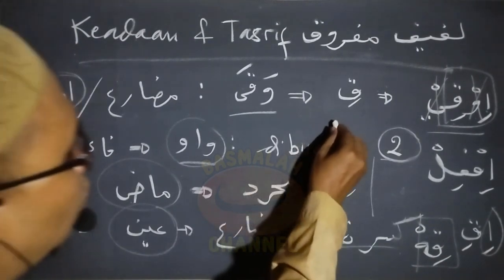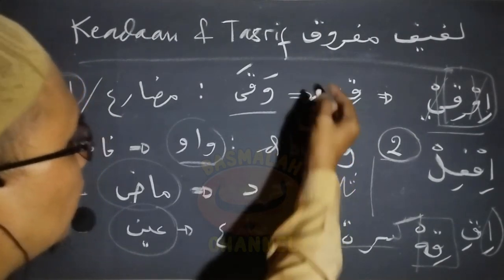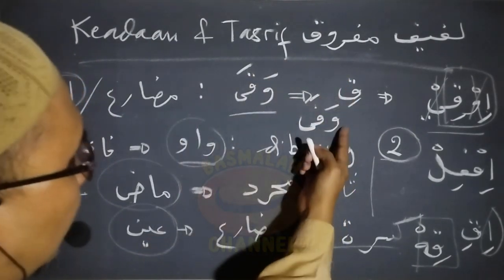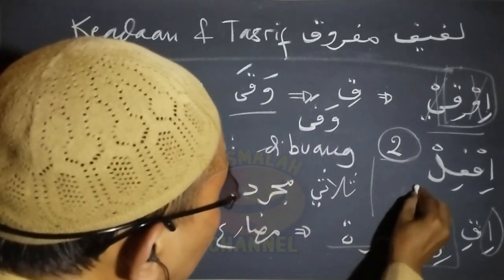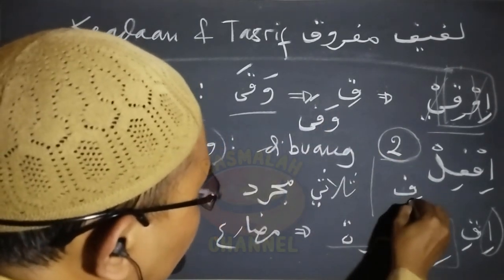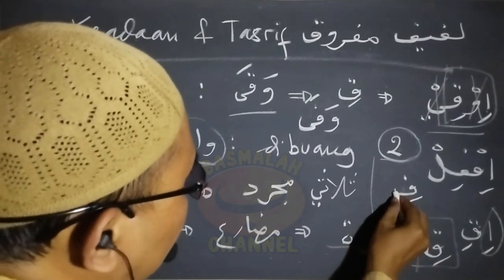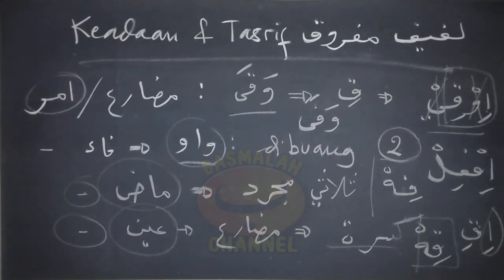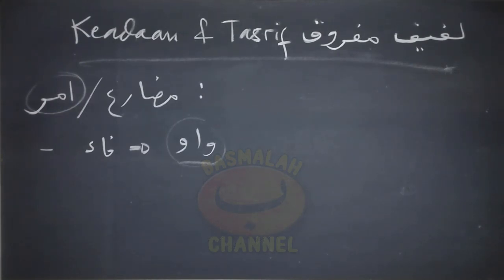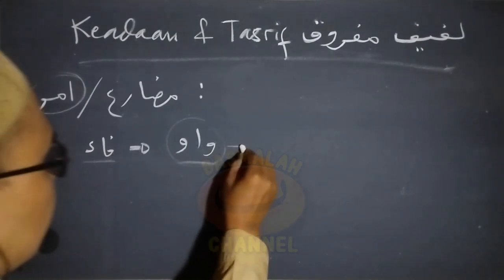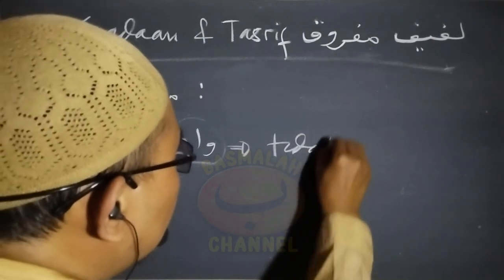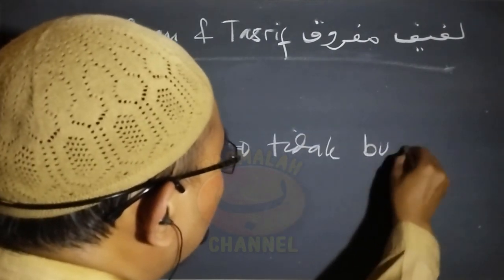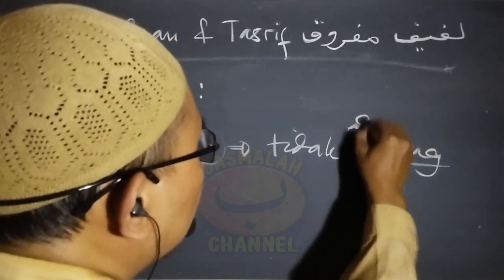Begitu juga dengan lafad wafa, wafa ini juga bentuknya sama dengan waqo, sehingga wafa bentuk fi'il amarnya akan hanya tertinggal lafad fi saja. Dan manakala di sini dalam keadaan waqaf maka ditambah dengan ha' sakat sehingga menjadi fih. Ini manakala memenuhi kedua syarat yang ada. Selanjutnya manakala tidak memenuhi kedua syarat yang tadi, maka huruf waw yang posisinya berada pada fa fi'il di sini tidaklah dibuang.